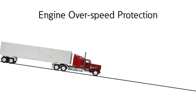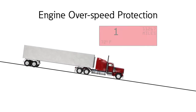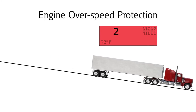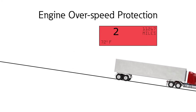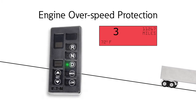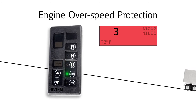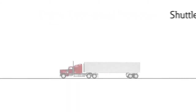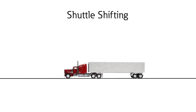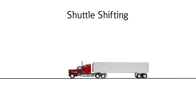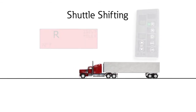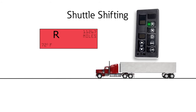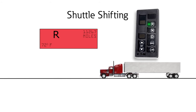Engine overspeed protection automatically upshifts when necessary to prevent engine overspeed in Drive, Manual, and Low modes. Shuttle shifting is another nice feature — shuttle shifting from Reverse to any forward mode is allowed if the vehicle speed is at or near zero.